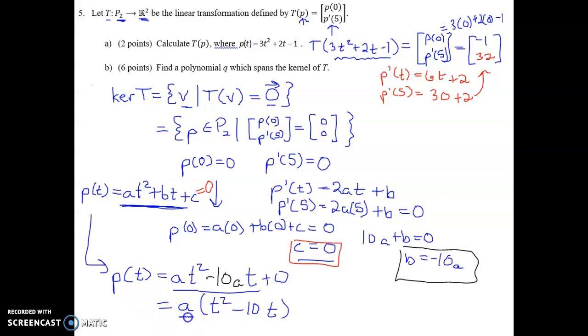So it's some scalar multiple of this polynomial right here. So this is the polynomial Q that part B is asking for. This is a polynomial that spans the kernel.